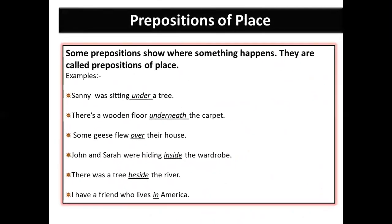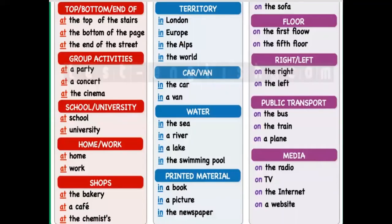The first type is prepositions of place. They show where something happens. For example: 'Sanny was sitting under a tree' — 'under' tells her position. 'Some geese flew over their house' — 'over' is the place. 'John and Sarah were hiding inside the wardrobe.' 'There was a tree beside the river.' To understand the use of at, in, and on for prepositions of place, let's look at the screen.